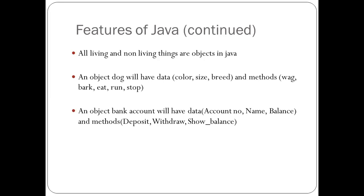For example, an object 'bank account' will have data such as account number, name, and balance, and methods like deposit, withdraw, and show balance. So here we have taken an example of a living object — the dog — and a non-living object — the bank account.